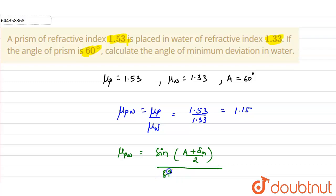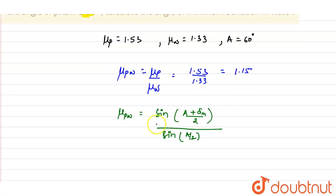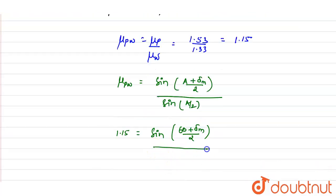We know the value of refractive index of prism with respect to water as 1.15, so substituting the value: 1.15 equals sine of 60 degrees plus delta m upon 2, divided by sine 60 upon 2.